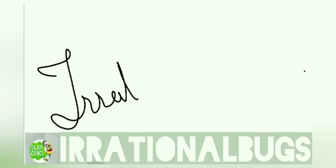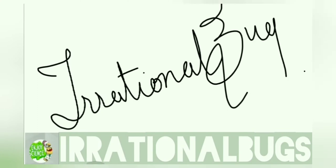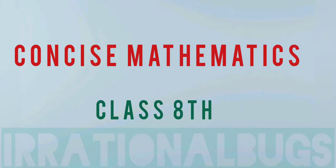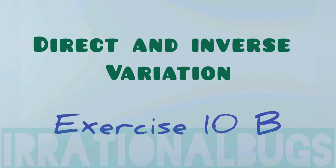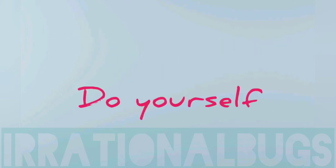Hello students, welcome to Irrational Bugs. Like and share these videos with your friends and do not forget to subscribe. Today we are continuing Concise Mathematics Class 8, Chapter 10, that is Direct and Inverse Variation. Exercise 10A is done, Exercise 10B is done. Question number 1 is to try yourself.